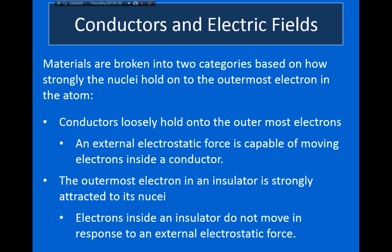An insulator, on the other hand, is made up of atoms which very strongly hold on to all of the electrons inside the atom. And as a result, if you apply an electric field, the electrons really can't wander very far from the atoms. They're very, very closely held to the atom.